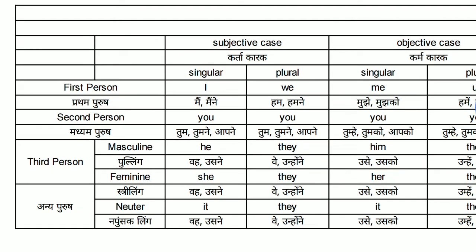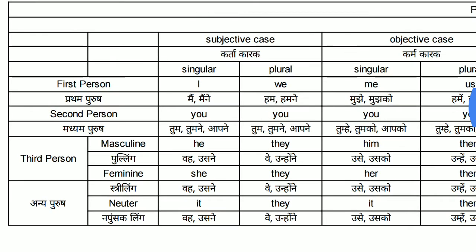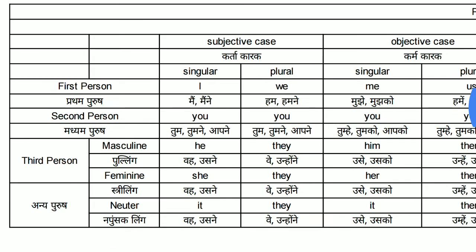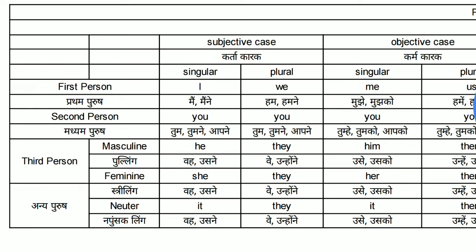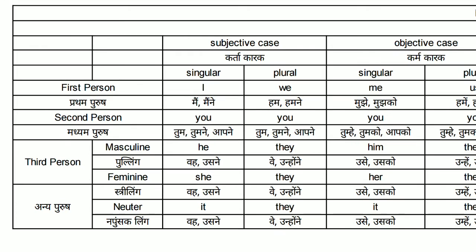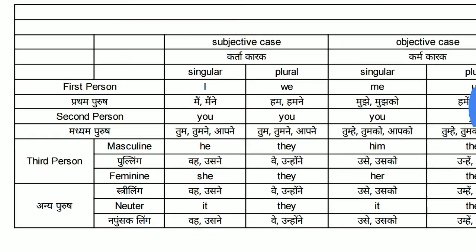Subjective case — Kartakar. When we use the form of pronoun at the place of subject, these are the forms. First person singular subject: I — Main, Ya, Maine. The plural form is We — Hum, Ya, Humne.